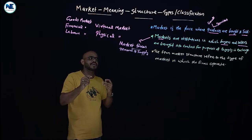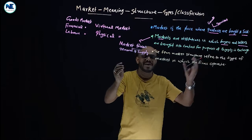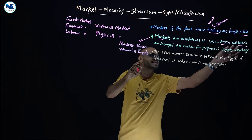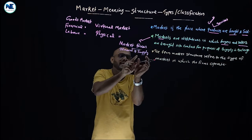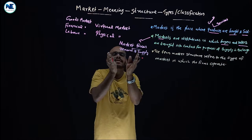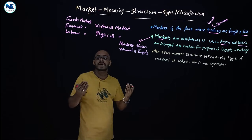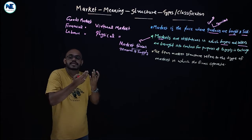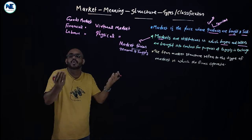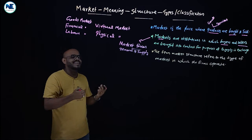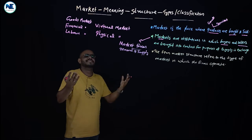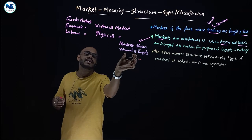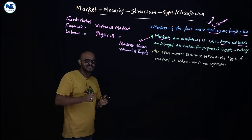Demand is coming from buyers, and supply is coming from sellers. The intersection of demand and supply will decide the price of the product and also what quantity of a commodity will be sold.